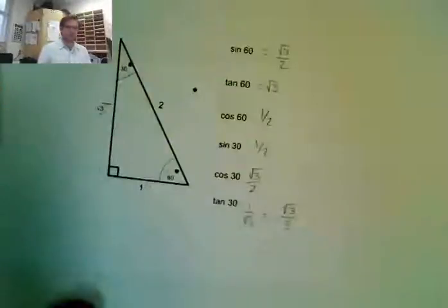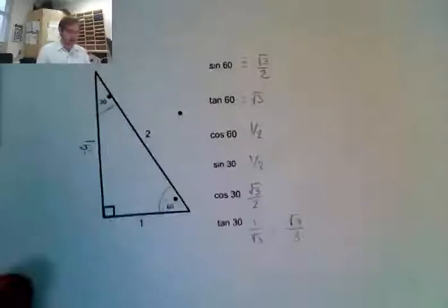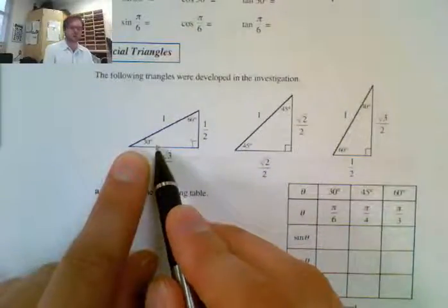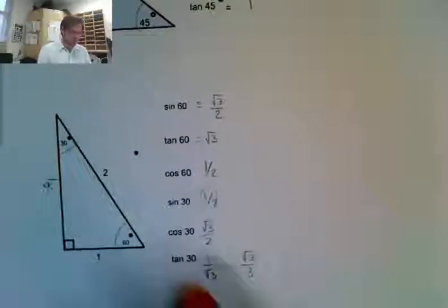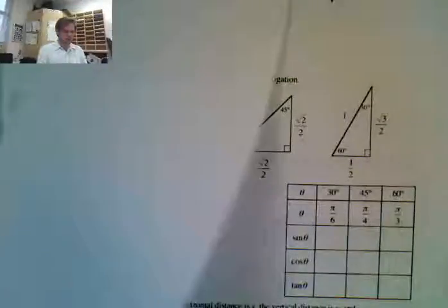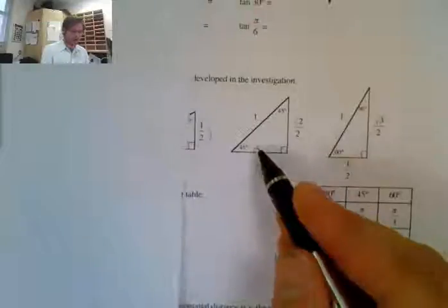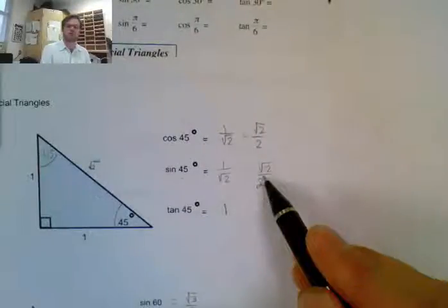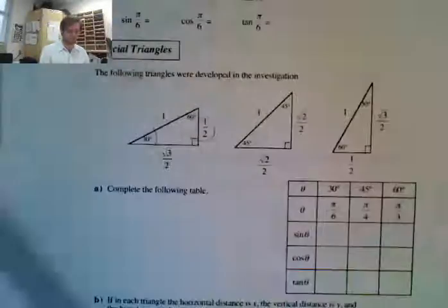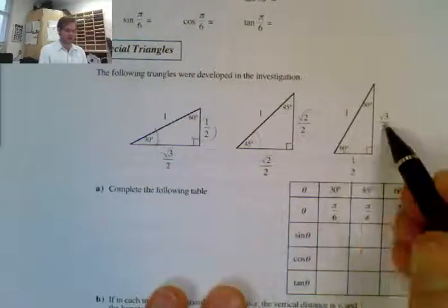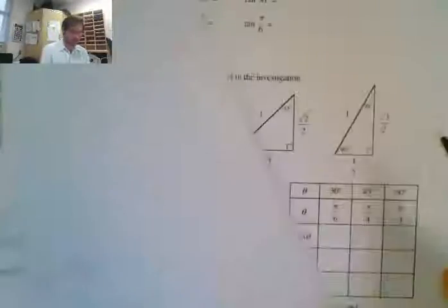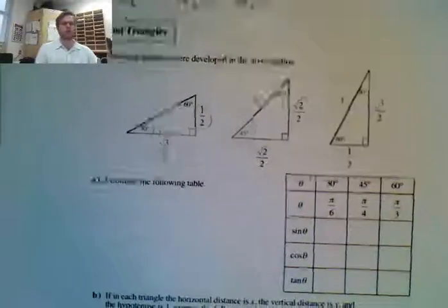Sin always refers to my y value, so sin 30 is 1 over 2, and cos 30 is my x value, which is √3 over 2. Looking at 45°, sin 45 is my y value — √2 over 2 — and cos 45 is my x value, also √2 over 2. For 60°, sin 60 is √3 over 2, and cos 60 is 1 half as the x value.